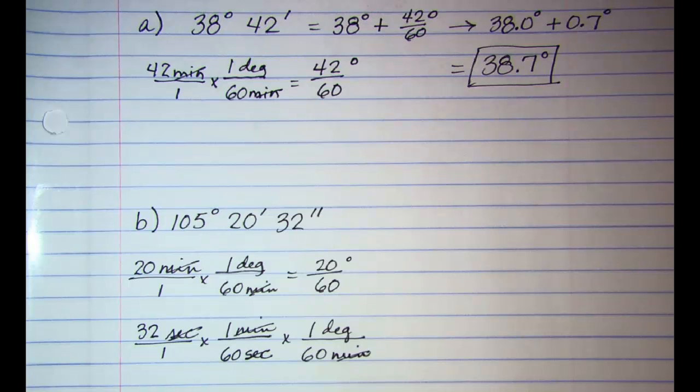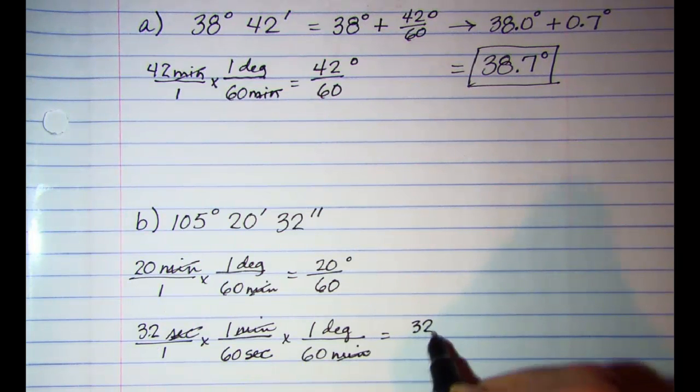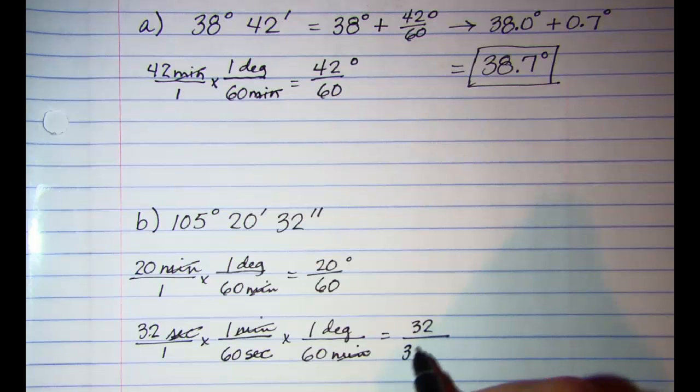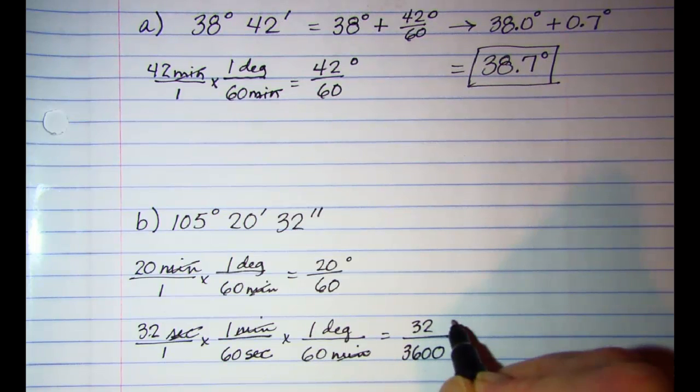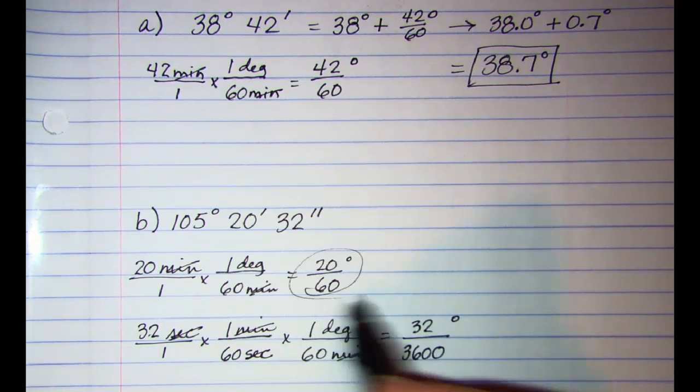Minutes over minutes is 1. So I see then that 32 seconds is the same as 32 over 3600 of a degree, because 60 times 60. So let's use these.